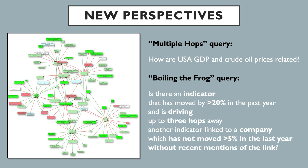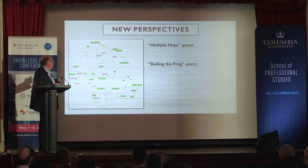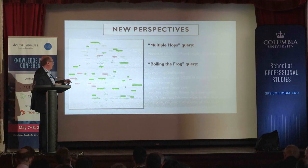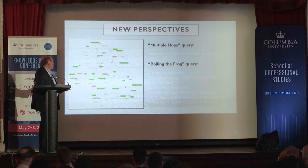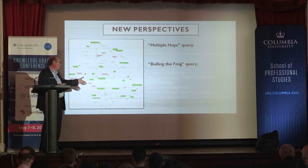A few ideas on what can be achieved: multi-hop queries. Is there an indicator — any of these nodes — that has moved by more than 20% in the past and is driving, up to three hops away, another indicator such as a stock price, which is linked to a company that has not moved that linked indicator by more than 5%, and where there has been no mention of the links up to this point? That's called a business opportunity for a trader. That's the type of question you can ask of a graph like this.